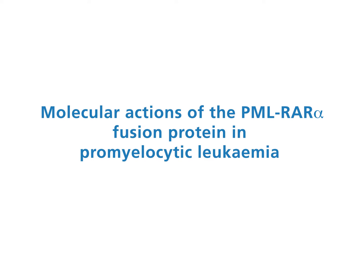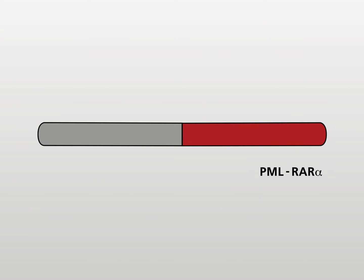Molecular actions of the PML-RAR-alpha fusion protein in promyelocytic leukemia. Acute promyelocytic leukemia is characterized by translocations of the retinoic acid receptor alpha gene, leading to the generation of hybrid genes. The hybrid genes encode fusion proteins that always consist of the truncated retinoic acid receptor alpha and one of a number of truncated proteins, which mediate the oligomerization of the fusion protein. Here the most common fusion protein is shown, which contains the truncated retinoic acid receptor alpha and domains of the PML protein.